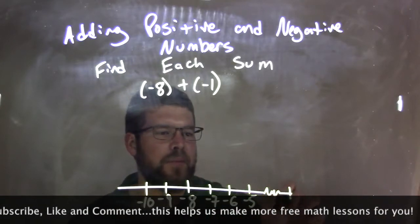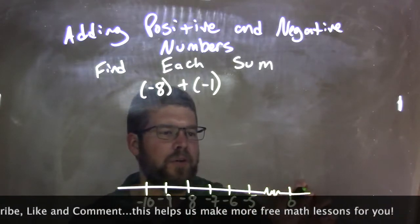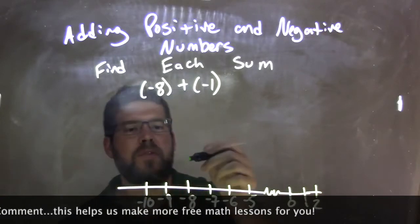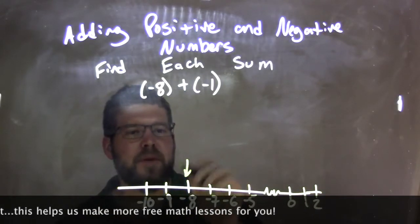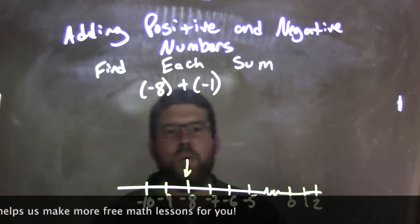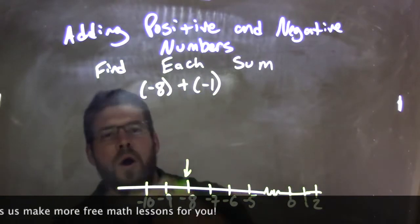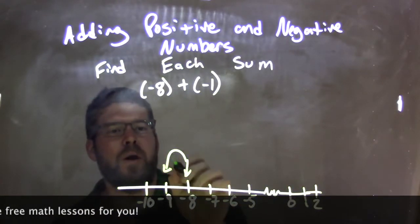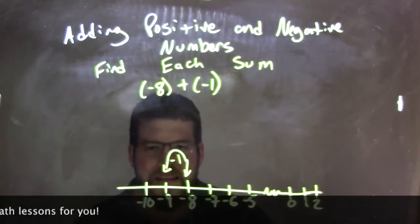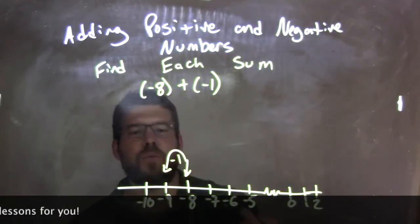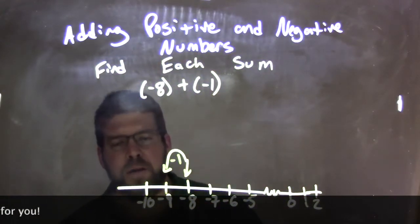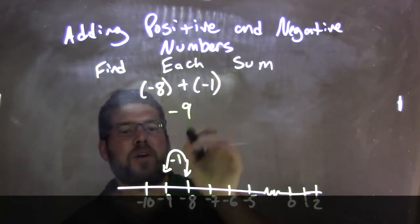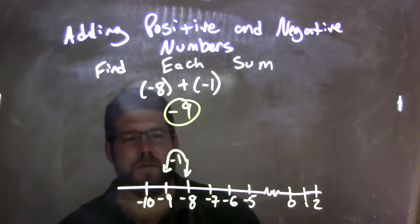If we had the break here, we'd be at 0, then 1, then 2. But we're starting with negative 8. We want to add one more negative 1 to it, so we're going to move to the left one unit. That's negative 1. So negative 8 plus a negative 1 is negative 9.